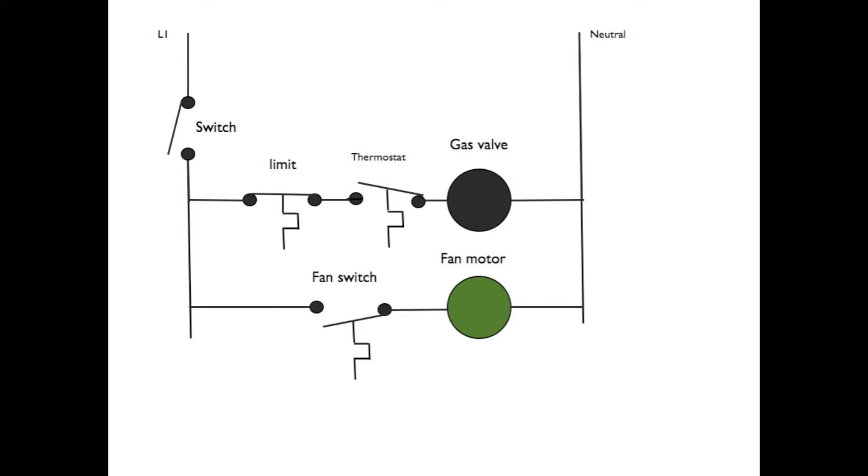Okay, let's see where the power is when we start. Now we're seeing where the power would be with the system switch on, the thermostat open, and a fan motor with a heat operated fan switch in another circuit.